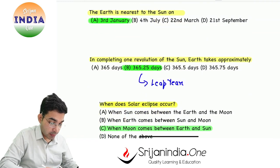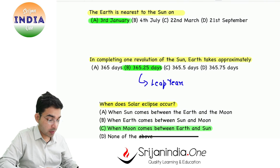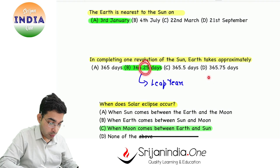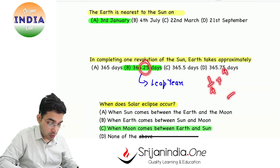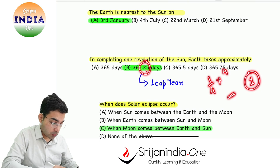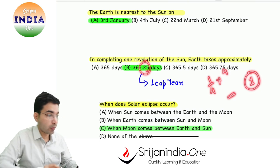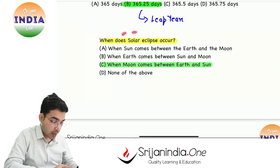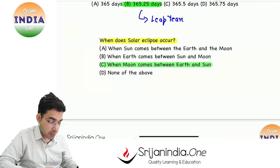Earth ka ek revolution 365.25 days mein complete hota hai. To har 4 saal mein 0.25, matlab 1/4 multiply by 4, so every fourth year hum ek saal add kar dete hai to compensate this 0.25. When does solar eclipse occur?